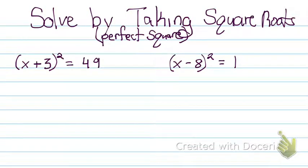Hello everybody! Now I'm going to teach you how to solve by taking square roots when it equals a perfect square. Looking at the first example it says x plus 3 squared equals 49.